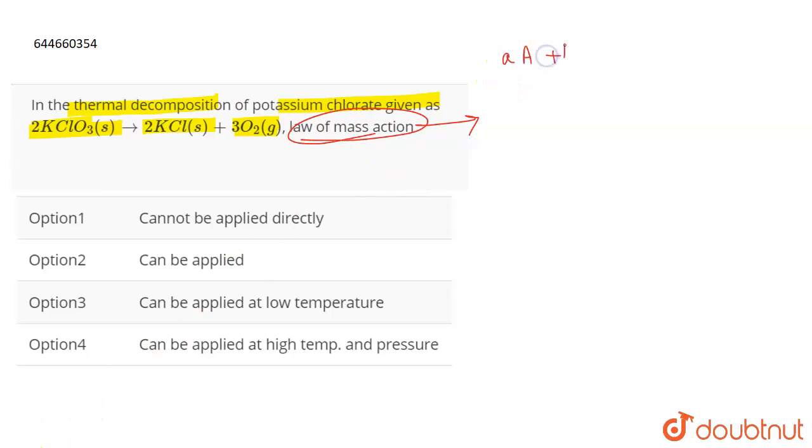reaction aA plus bB giving cC plus dD. So according to the law of mass action, we can express—now this is an equilibrium reaction—so we can express the equilibrium constant of this reaction as